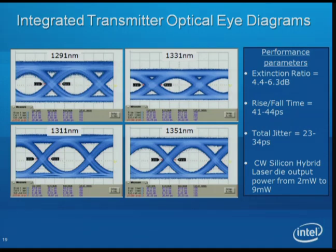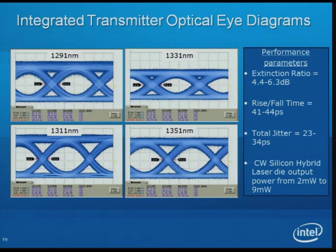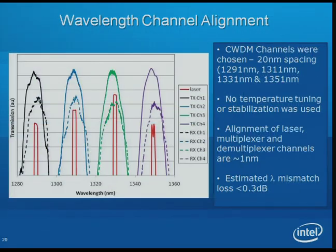The link works. Extinction ratio—the on-off ratio—is good. Rise and fall time and total jitter are relatively consistent across all four channels, with 2 to 9 milliwatts of optical power output, providing reasonable margin at this first demonstration. One of the keys for WDM optical links is that all wavelength-sensitive components must be aligned together. Ideally this alignment is done passively in a manufacturing environment, rather than by temperature tuning, which is done for the very highest-end performance applications.